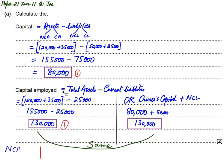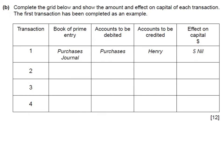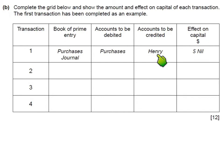There is a further part to the question: we have a table to complete. During the month of April, Joe recorded the following four transactions. We need to identify the book of original entry, which account is debited and credited, and the effect on capital. The examiner has provided a sample entry for reference.